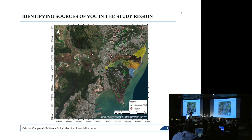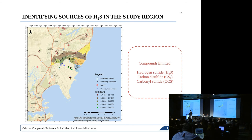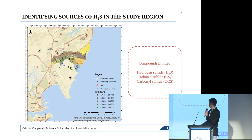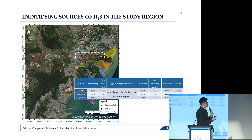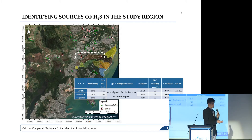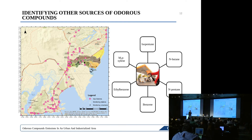Next, we listed the sources of VOCs and TRS in our study region. This map shows the location of the study region: green triangles mark the VOC sources, pink markers show the wastewater treatment plant locations. Highlighted is the community that is constantly complaining about odor emissions in their neighborhoods — this study was conducted for them.